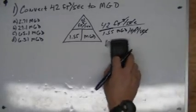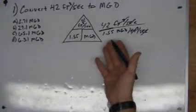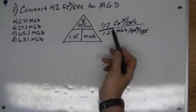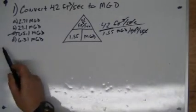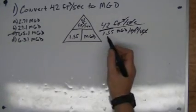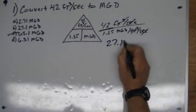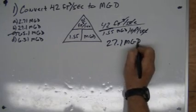That's going to be less than 42, so it's not going to be this option. It's probably going to be 27. Let's check: 42 divided by 1.55 is actually 27.1 MGD. So that's the answer.